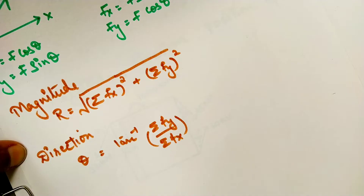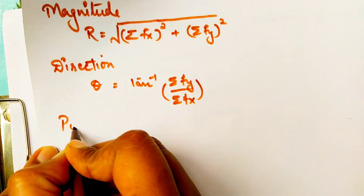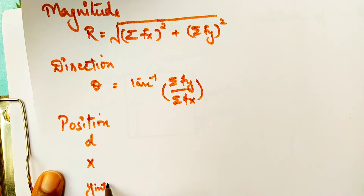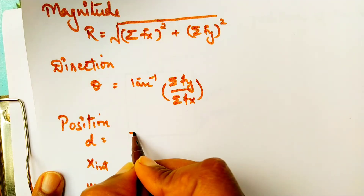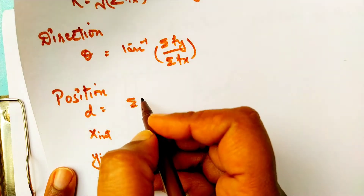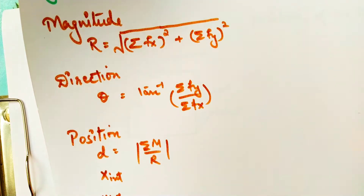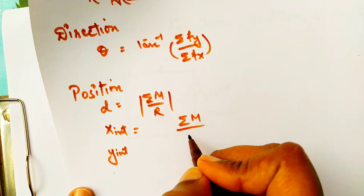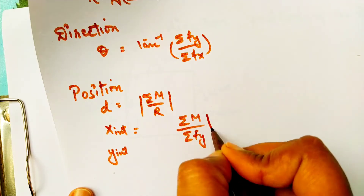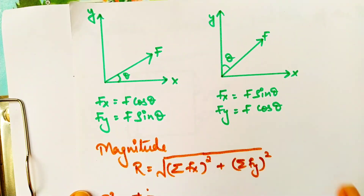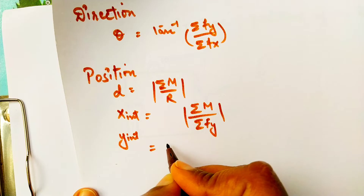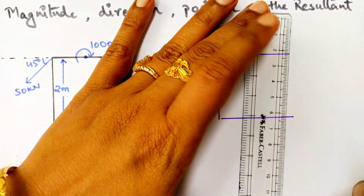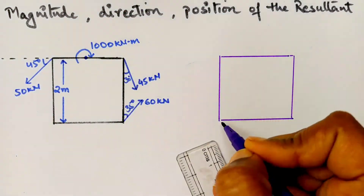The direction theta is tan inverse of summation Fy over Fx. For position, we need to find three things: d, x-intercept, and y-intercept. For that, we take the moment at a particular point of the whole system. The formula is summation M divided by R for d; for x-intercept it is summation M over summation Fy; and for y-intercept accordingly. These are the formulas we are going to use.